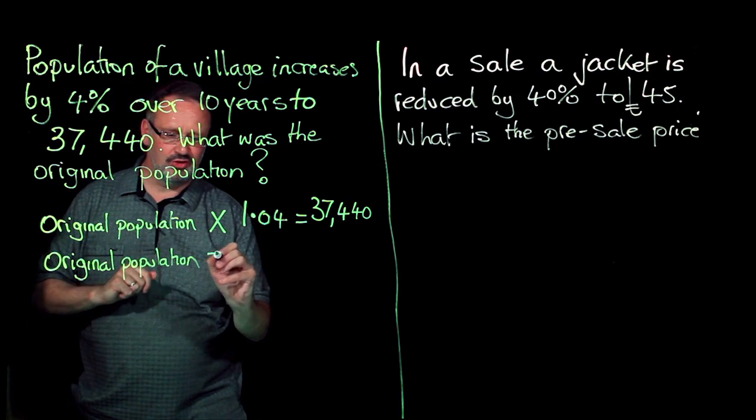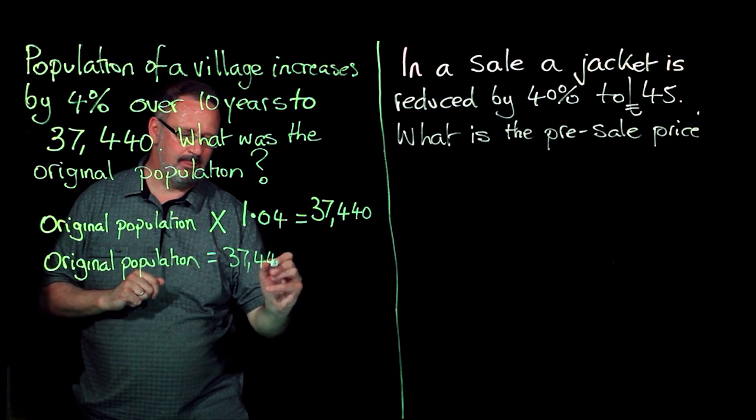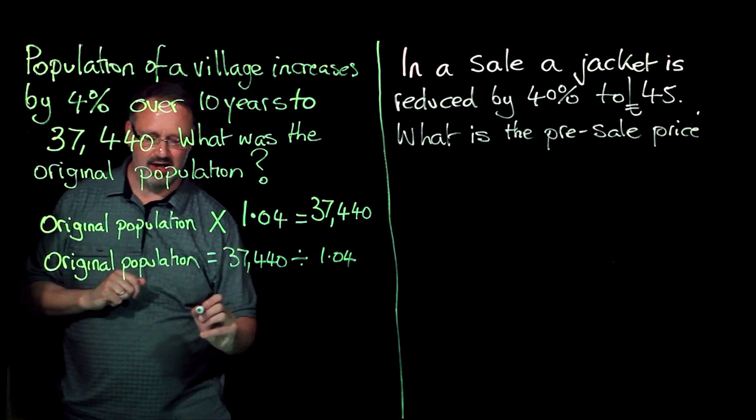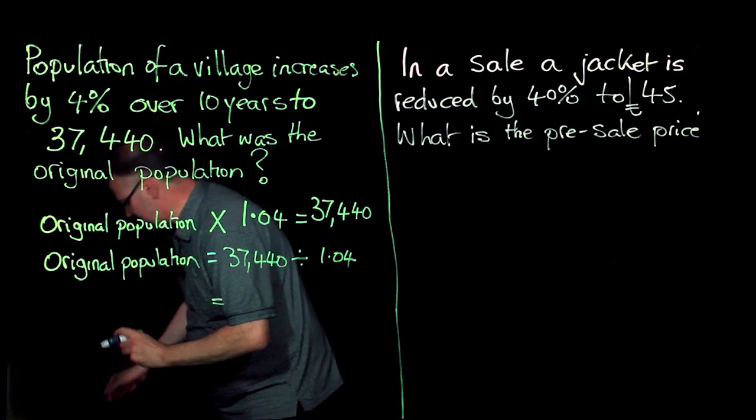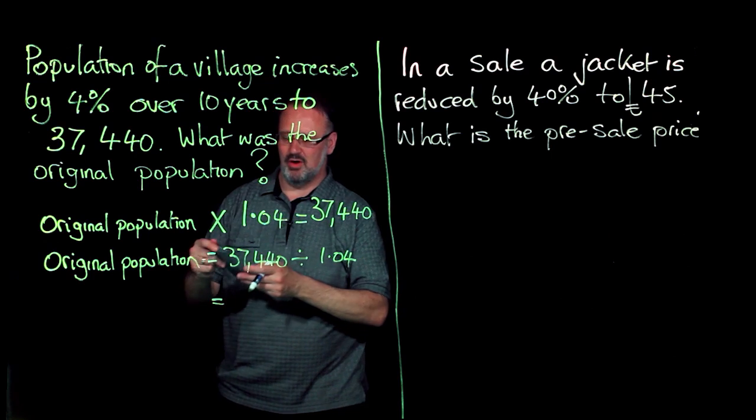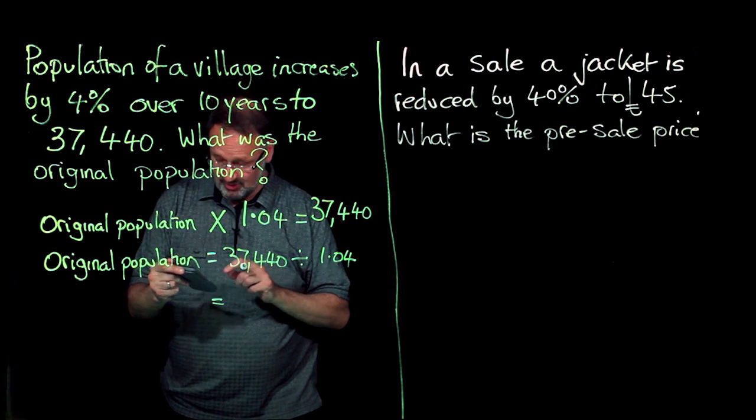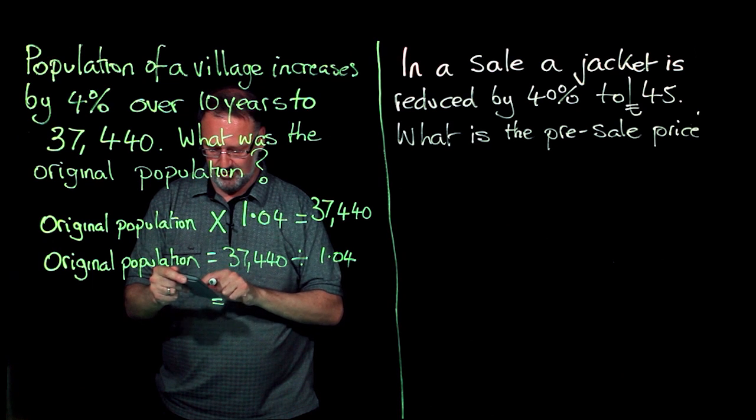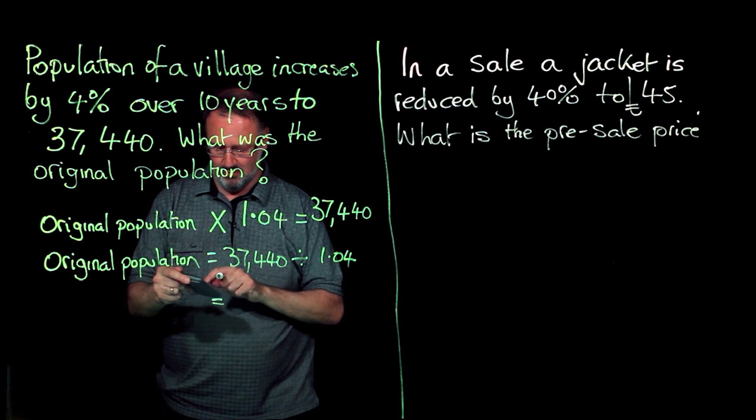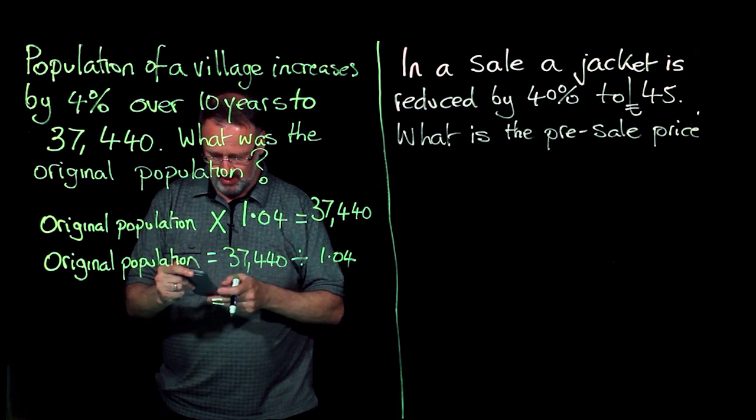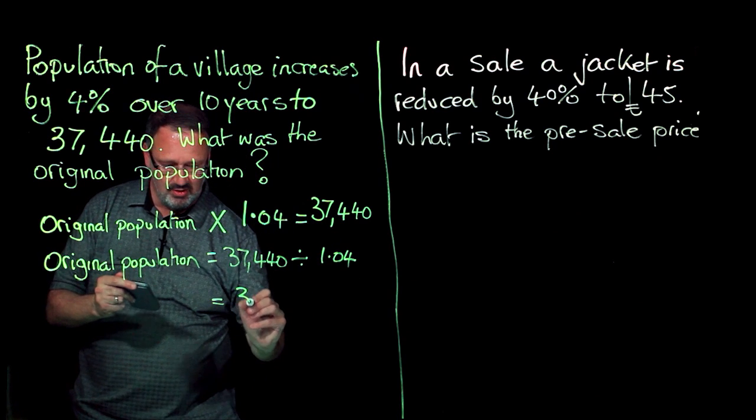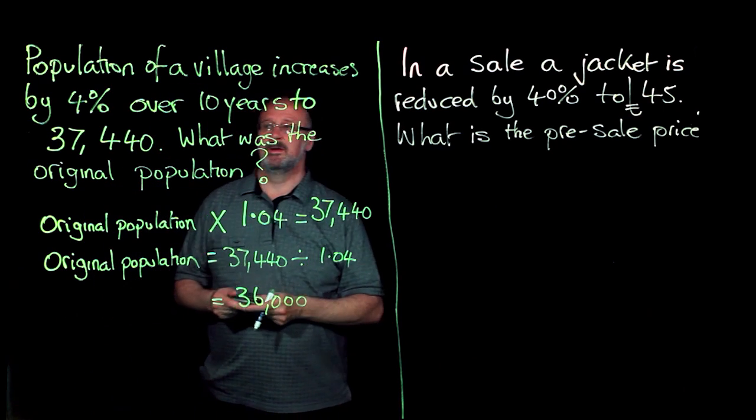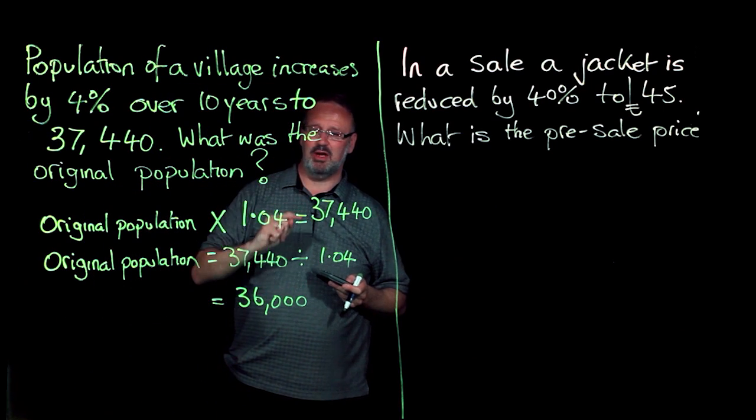Inverse function: 37,440 divided by 1.04. Now I go to my calculator, fortunately I have one readily to hand. Make sure it's turned on. 37,440 divided by 1.04 equals, and I get the answer 36,000. So my original population...